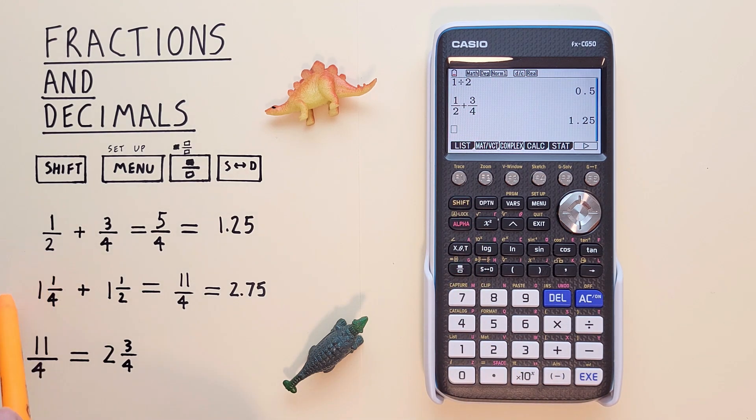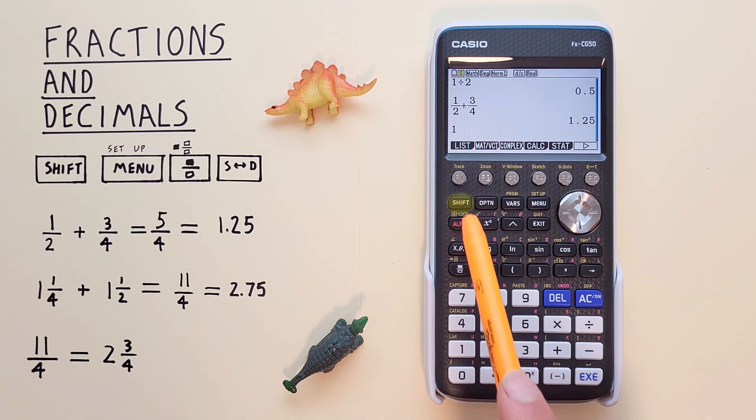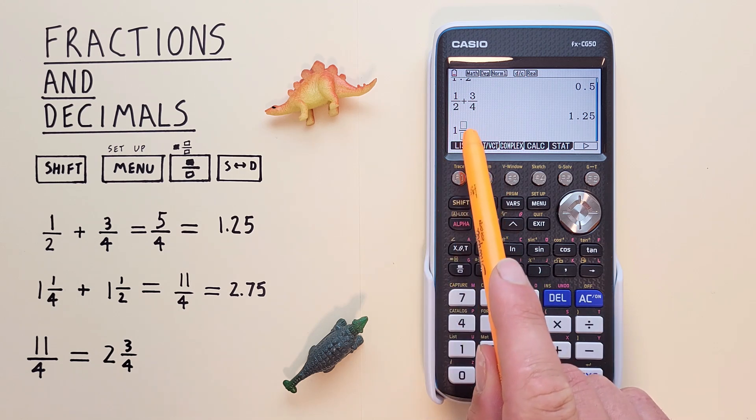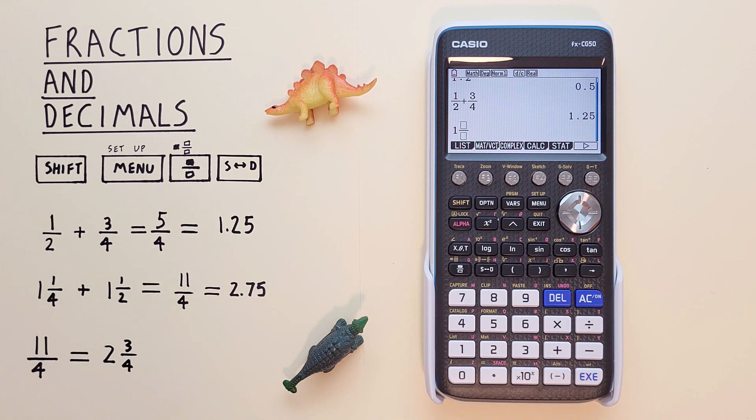So if we wanted to enter this, we can start by entering the 1. And then we press SHIFT fraction. And again, we see we get our two boxes. And then in the top box, we enter the 1, scroll down, enter the 4, and scroll out.